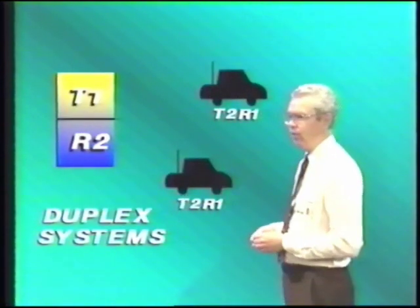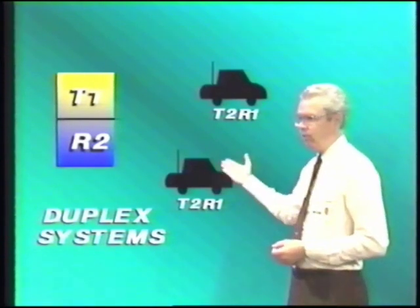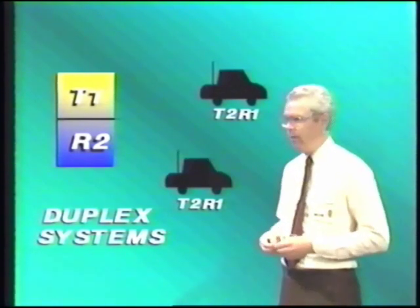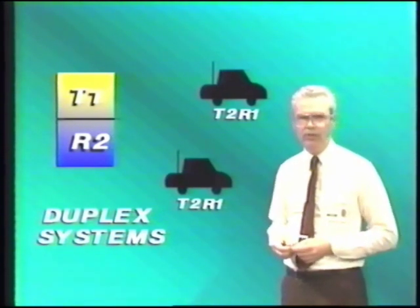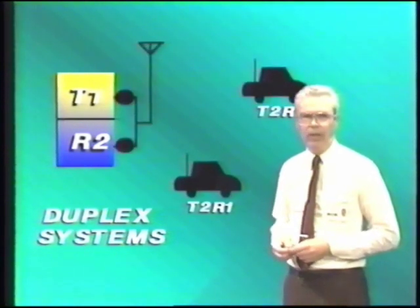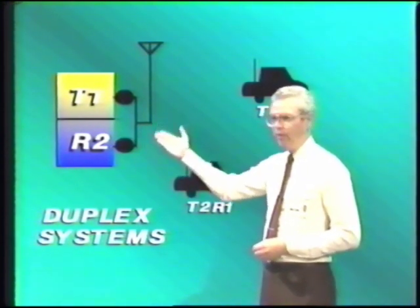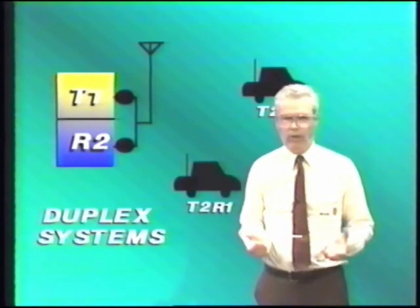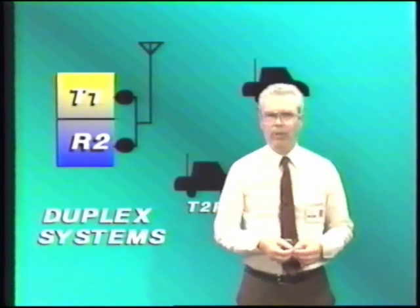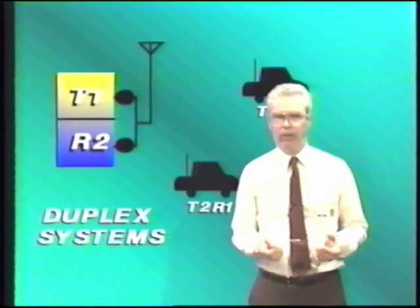Another type of system arrangement is full duplex. We normally don't see full duplex arrangements for dispatching-type systems. The full duplex system looks very much like the two-frequency simplex system in block diagram form, but the difference is the receivers at both the base and the mobiles are not muted when the transmitter is on — they're left open and operating at all times. Special arrangements have to be made to prevent the transmitter from interfering with the receiver. Separate antennas for the transmitter and receiver must be used, or more commonly a duplexer filter is used to combine the transmitter and receiver on the same antenna without interference.